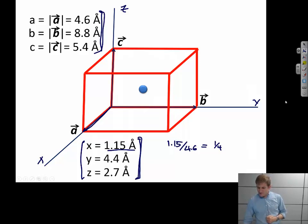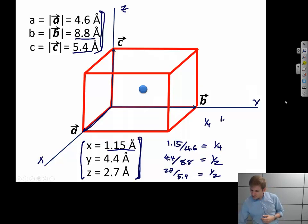We can do the same thing for Y. 4.4 over 8.8, which is the length of the B lattice vector. And this equals 1 half. And finally, for Z, we have 2.7 angstroms over 5.4 angstroms. And this also equals 1 half. So the position of this particular atom would be 1 quarter, 1 half, 1 half.